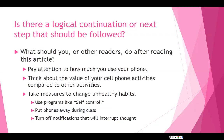I can also consider what the next logical step is. After reading this article, what should readers do? Maybe they should pay attention to how much they use their phones. They should think about the value of those activities compared to whatever they could be doing instead. They could take measures to change unhealthy habits — things like using programs such as something called Self Control, putting phones away during class, or turning off notifications that will interrupt thoughts. So that's the steps to go through to summarize an article, and when you're writing your summary paper, hopefully those are the steps you'll follow.